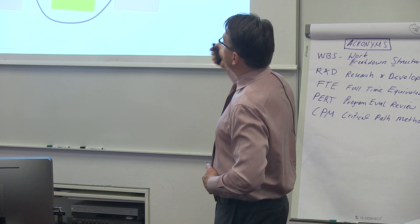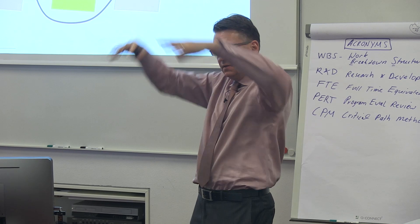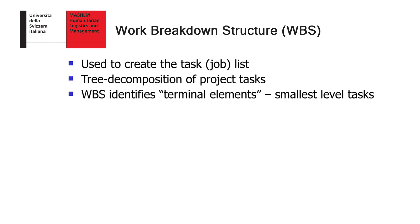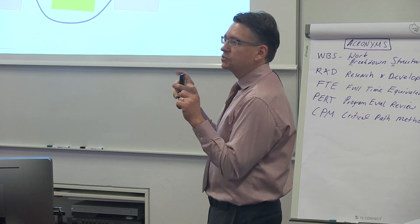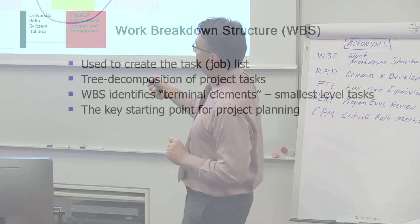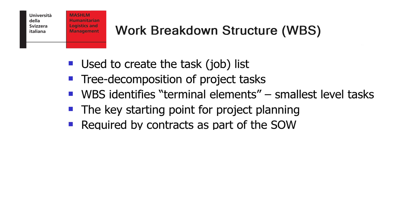The work breakdown structure, or WBS, is used to create the task list. It's essentially a tree decomposition — it has a root and then it branches out into project tasks. The WBS identifies the terminal elements, which are the smallest tasks you're not going to decompose any further. It's the key starting point for project planning, and it's often required as part of a contract or a statement of work.